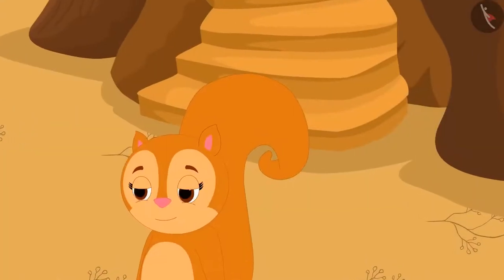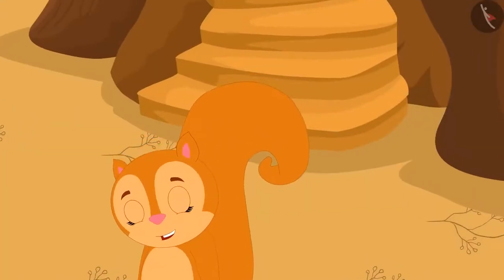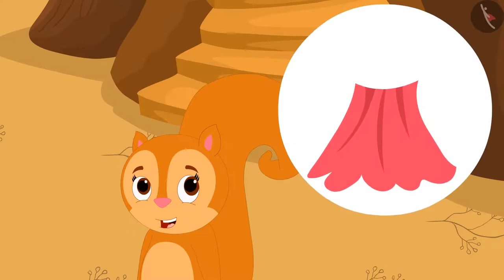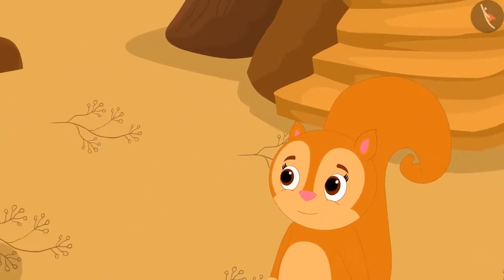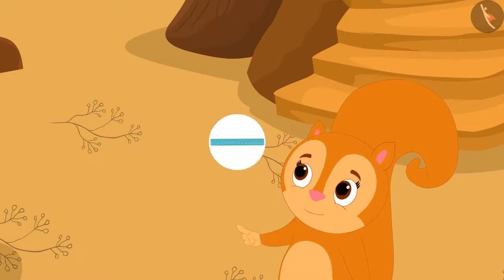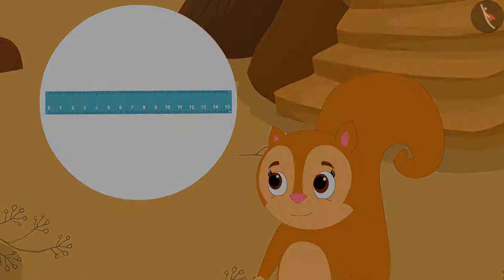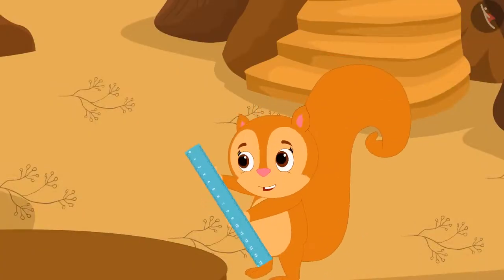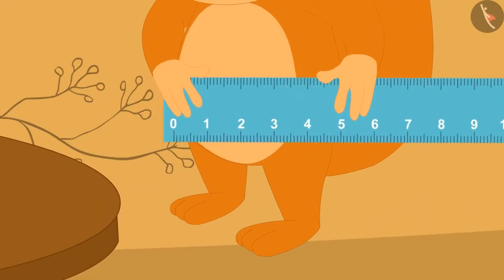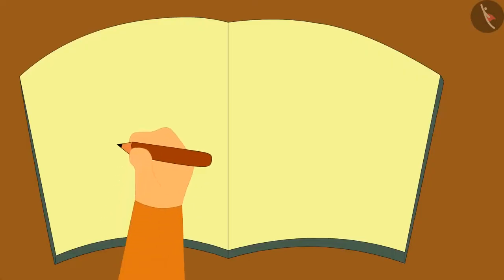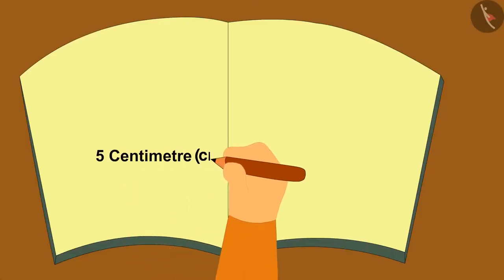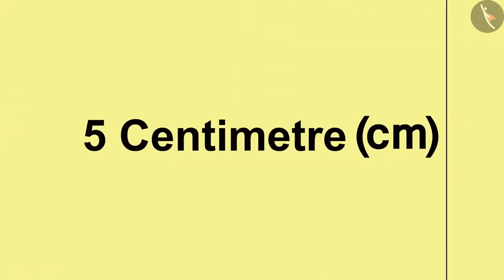Now, Chanda wants to get a skirt made for herself. She immediately placed the ruler next to her waist in such a way and wrote on a paper that her waist measure is 5 centimeters.